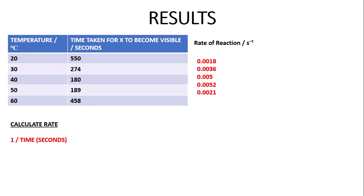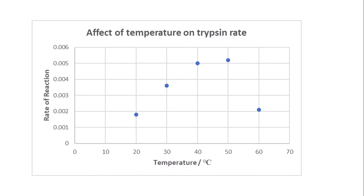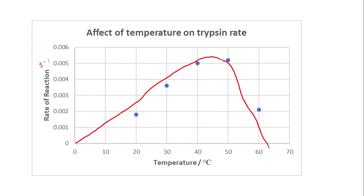The next stage is to draw a graph from your results, with temperature on the x-axis and rate of reaction — in units of per second — on the y-axis. Plot all your points and draw a line of best fit. As you can see, the rate is initially quite slow but increases, then reaches a peak or optimum temperature at around 40 to 50 degrees Celsius, and then the rate of reaction rapidly declines after this.